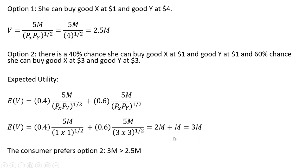Since 3M is greater than 2.5M, the consumer prefers option two. It provides a higher level of expected utility than option one.